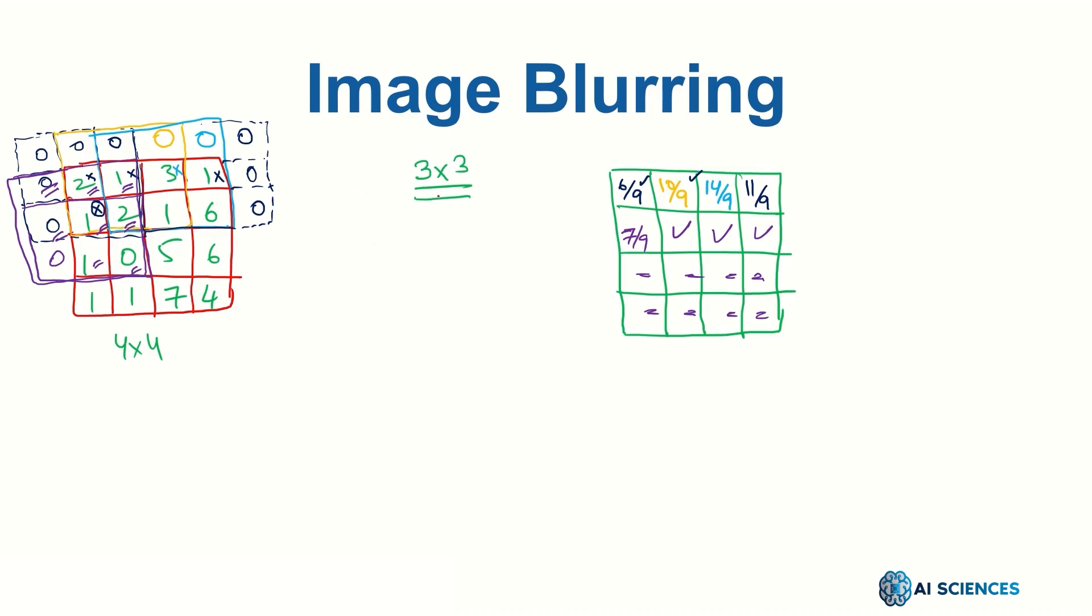If you remember what we did is we placed the center of the window at a particular pixel and we surrounded that pixel by a 3x3 window. Then we took the average of that window and placed the average at the same location where the center was placed in the input image. Then we slid that center everywhere at every pixel and generated the blurred image.